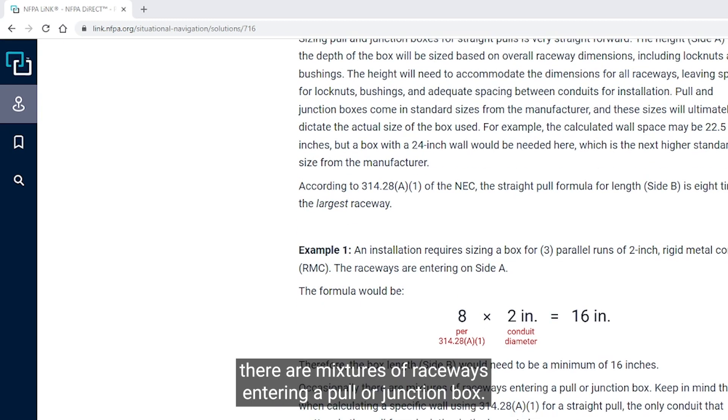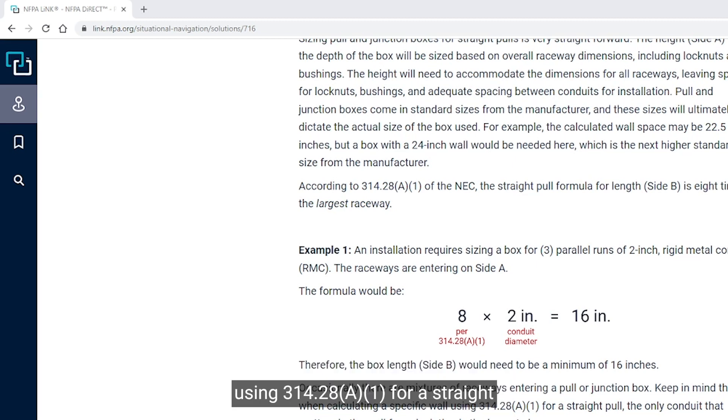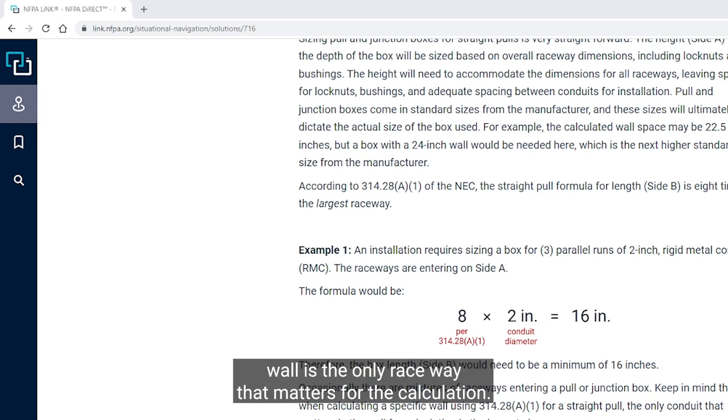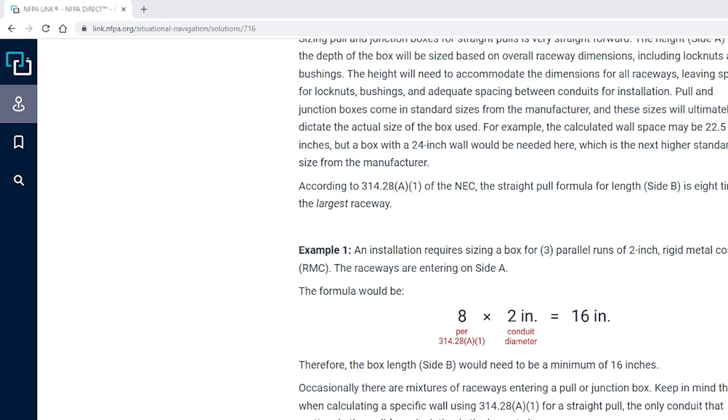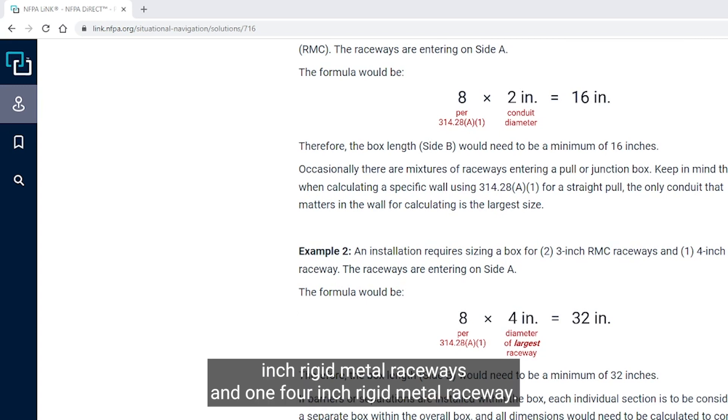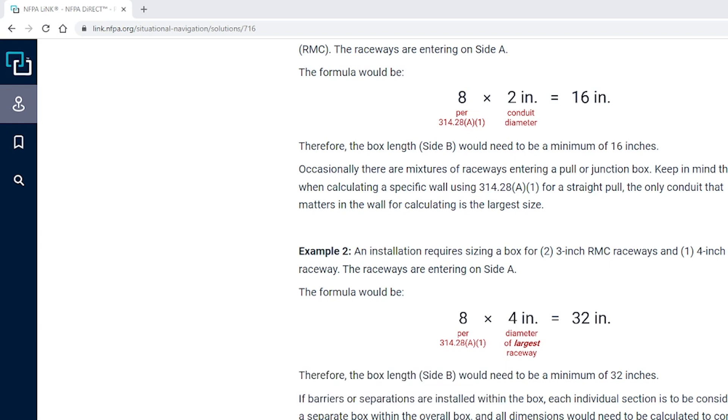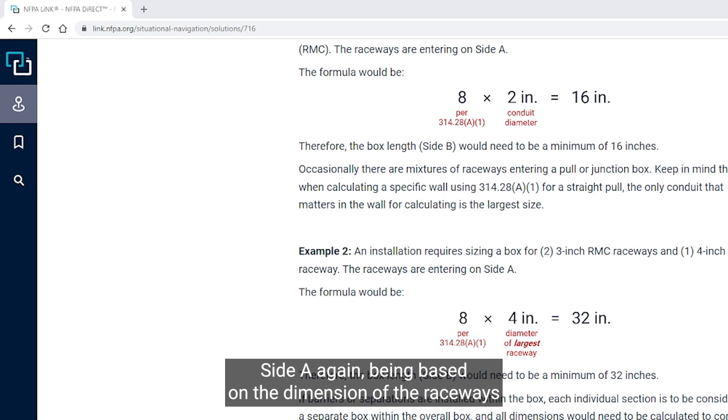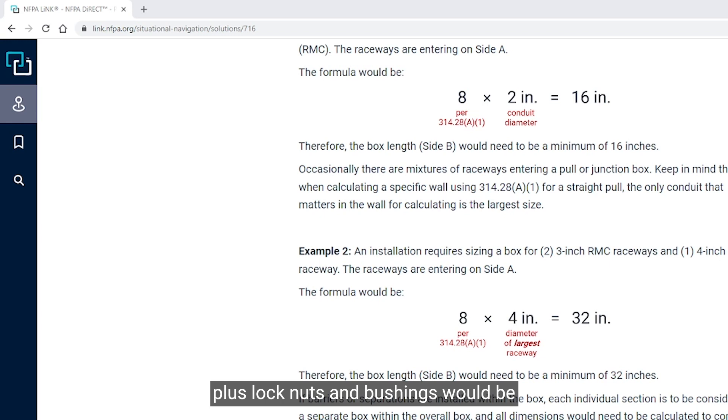Now, occasionally there are mixtures of raceways entering a pull or junction box. Keep in mind that when calculating a specific wall using 314.28(A)(1) for a straight pull, the largest raceway on the box wall is the only raceway that matters for the calculation. For our Example 2, we have an installation that requires a box that will have two 3-inch rigid metal raceways and one 4-inch rigid metal raceway entering on side A. So we're solving for side B, which would be 8 times 4, which would be 32 inches. Side A, again, being based on the dimension of the raceways plus lock nuts and bushings, would be 6 plus 4 is 10, so likely to be a 12-inch tall box. You'd probably have a 32-inch by 12.